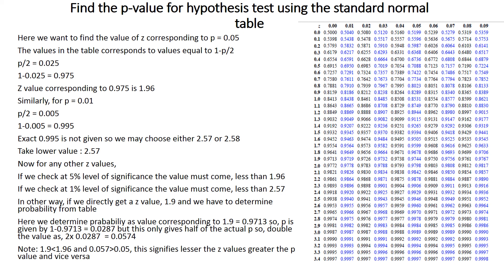In summary, remember the two critical Z values: 1.96 and 2.57. If your calculated Z value is less than the critical value, accept the hypothesis. Alternatively, find the P value from the table and if it is greater than 0.05 or 0.01, accept the hypothesis. Always keep in mind: the lesser the Z value, the greater the P value, and vice versa.